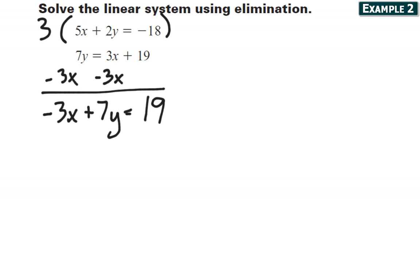When I multiply the first equation by 3, that's going to make it 15x plus 6y equals negative 54. And the second equation, I need to multiply it by 5.